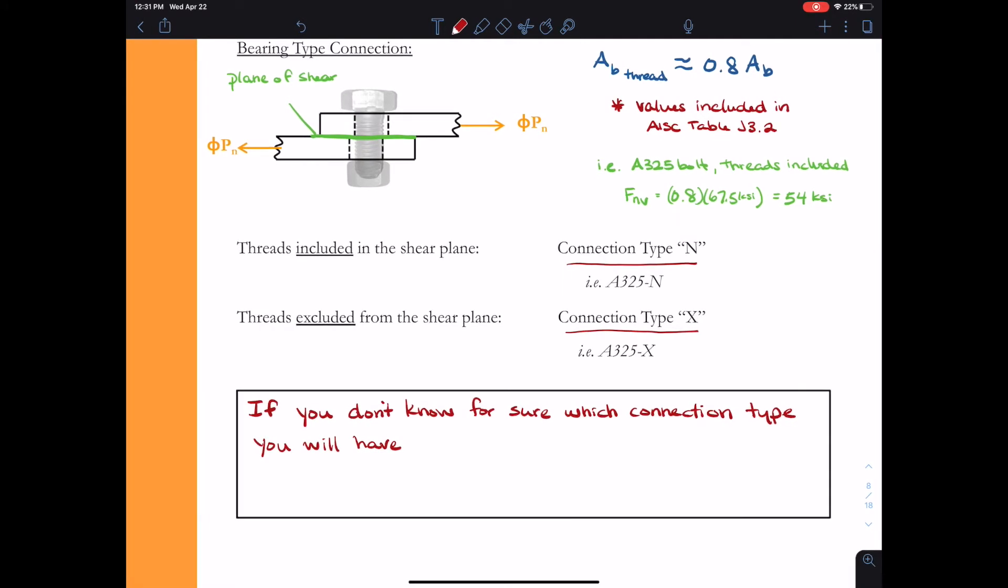Remember, when you're a designer, you don't really know what the final condition of the structure will be. As a designer, you're not going to specify the shank length of the bolts and the thread length of the bolts. You're going to just say what type of bolts need to be used, and then the contractor will use bolts that meet your requirements. Therefore, when you're designing, we typically have to assume that we have the threads included in the shear plane so that we can make sure that our bolts will not be failing in the field. Only if you're very confident that the shear plane will be through the shank of the bolt, only if you're super confident, that's the only time you would ever consider designing connection type X.